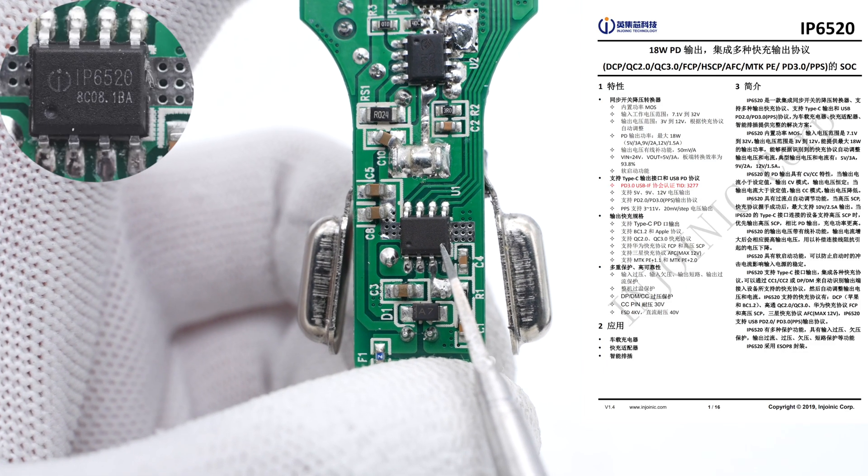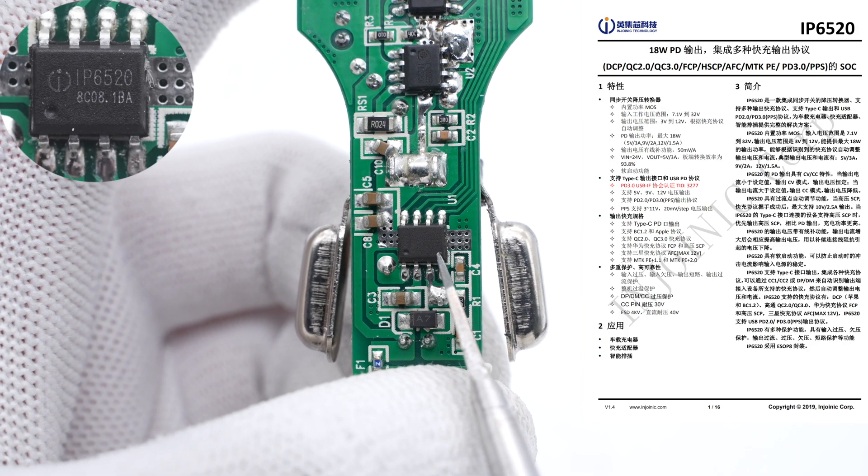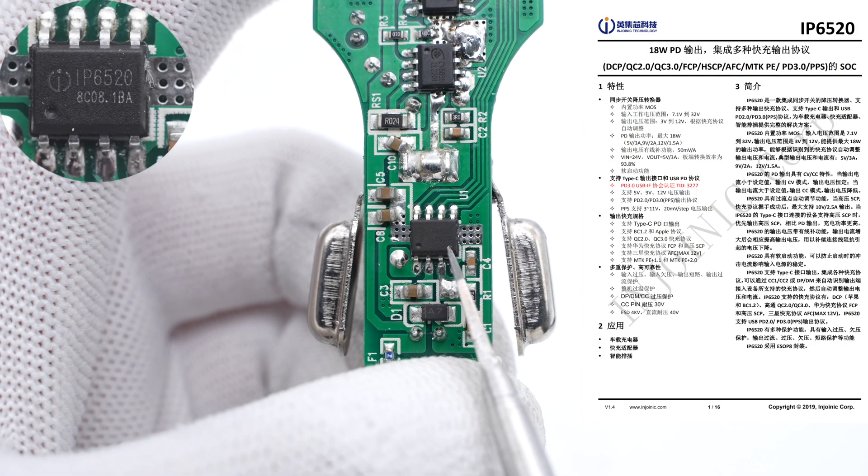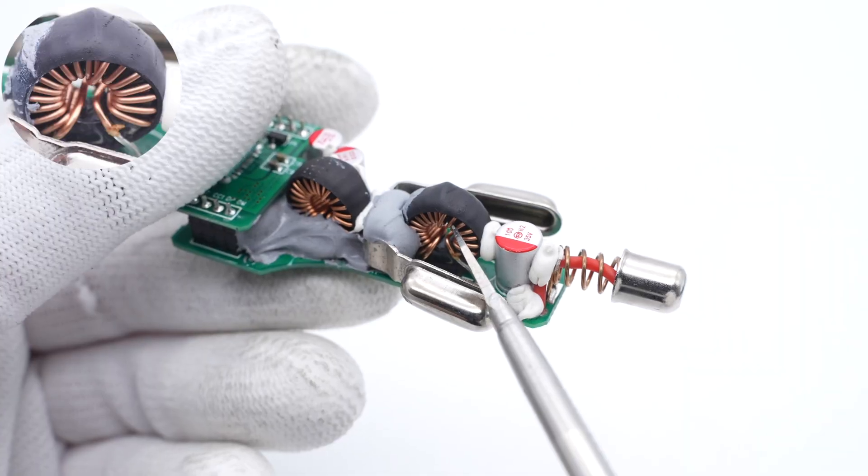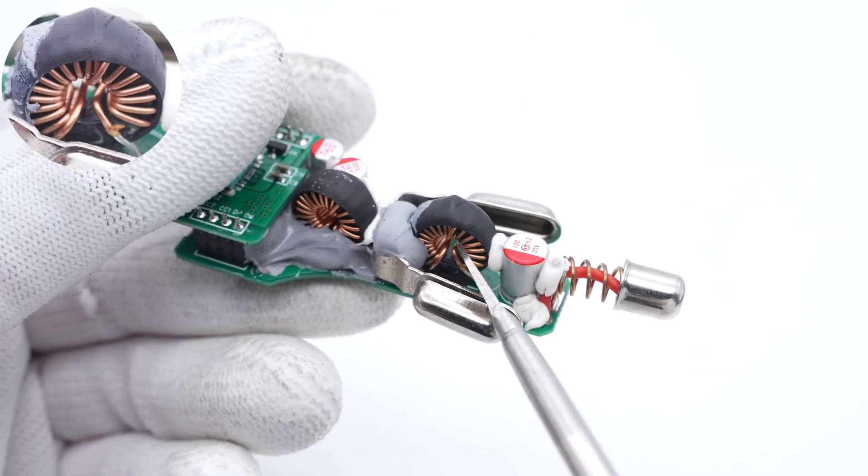The synchronous buck IC is from Indronic. It integrates a buck converter and the protocol chip, which can simplify the PCB circuit. This buck inductor works with the buck IC we just mentioned.